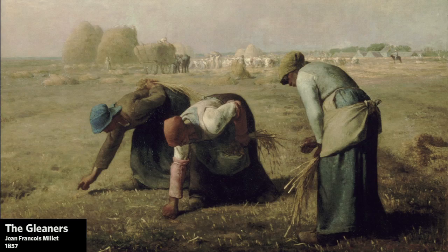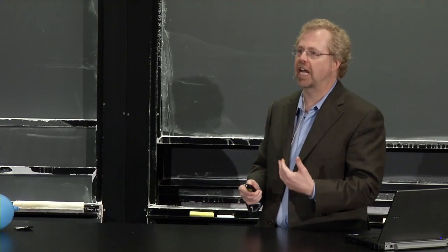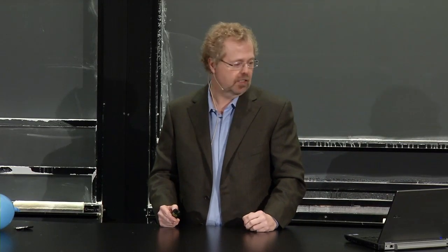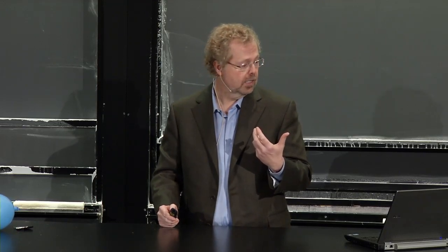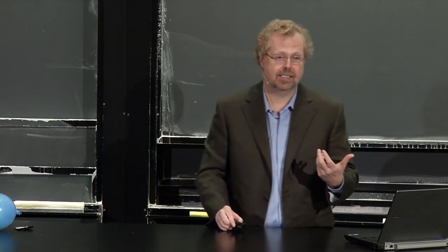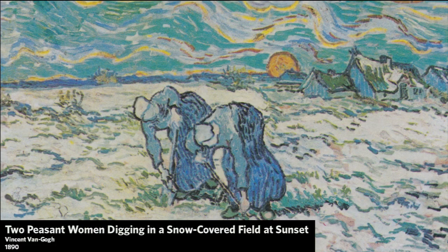Modernism is actually an old idea in art. Here's a painting from 1857 called The Gleaners, by Jean-François Millet—it typified the academic phase in French art and was realistic. A few years later, Van Gogh paints the same topic—two people out in the field—but it's totally different.